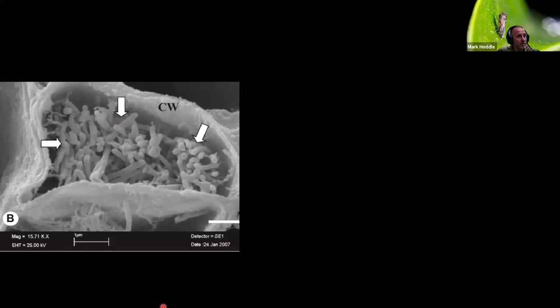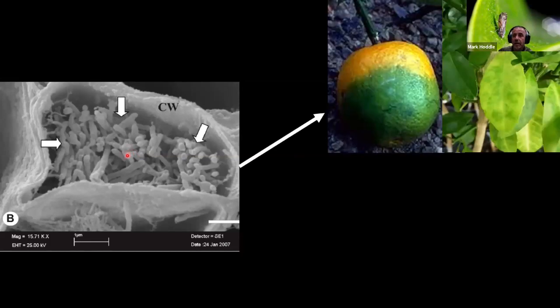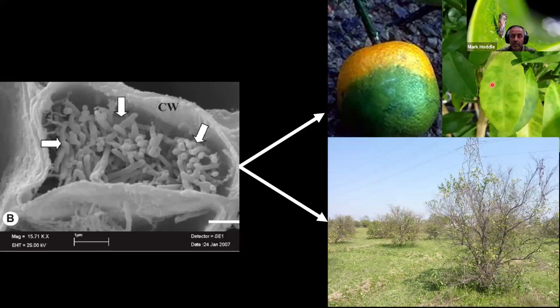Psyllids are relatively easy to kill with insecticides — up until they get resistance, which seems to be an emerging problem in Florida and one we don't want to see here in California. The real issue with the psyllid is the fact that it spreads this phloem-limited bacterium called Candidatus Liberibacter asiaticus, which causes a disease called Huanglongbing, or sometimes referred to as citrus greening. You can see the bacteria that have multiplied within the phloem tubes of an infected citrus plant. Characteristic symptoms include irregular ripening of fruit, mottled irregular chlorotic patches on leaves, premature fruit drop, small and misshapen fruit, and plants that are infected can die within about five to eight years post-infection. Currently there's no cure for infected trees.